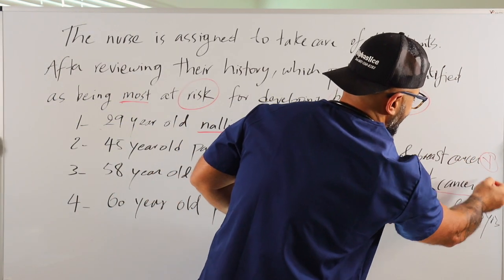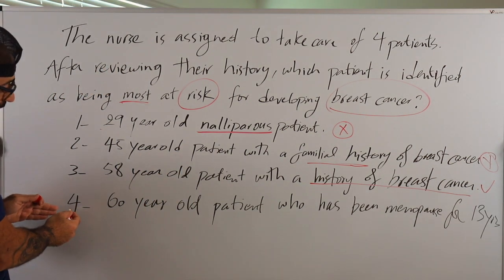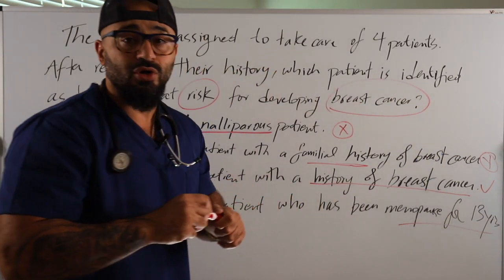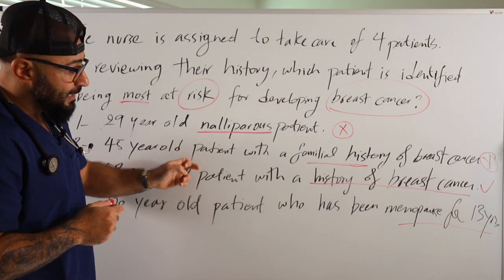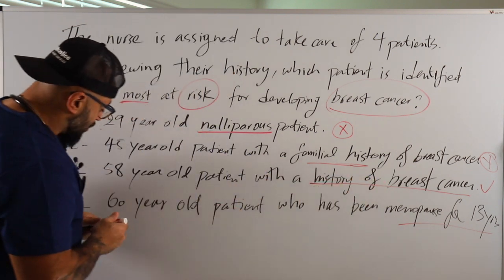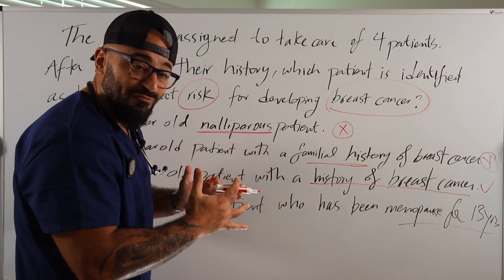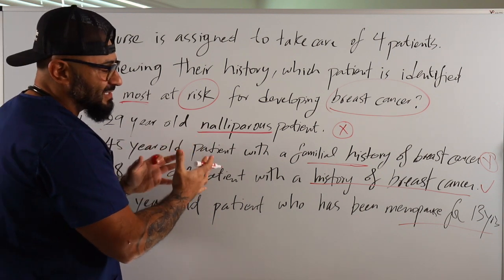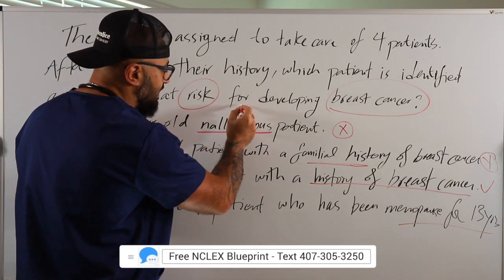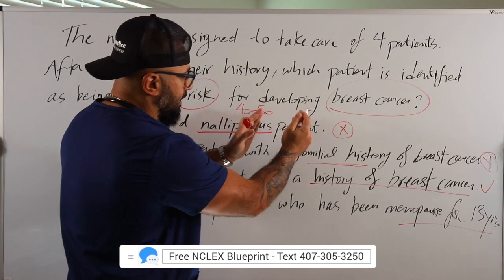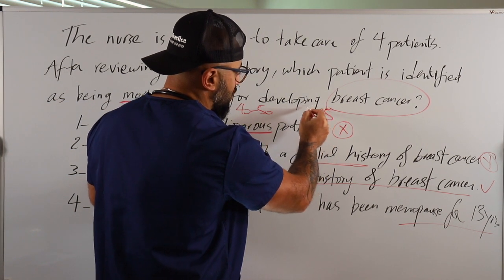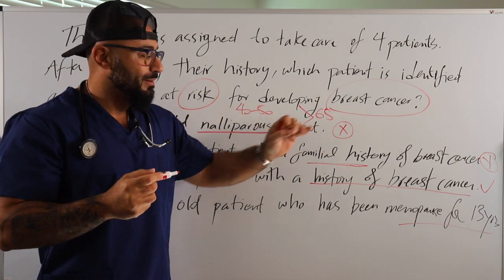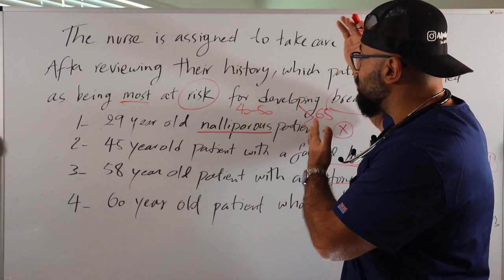Option number two is canceled because option number three is more powerful. Option number four: a 60-year-old patient who has been in menopause for 13 years. Being 60 and in menopause for 13 years is not a higher risk than a patient who had cancer before. The highest incidence of breast cancer is from age 40 to 50, then above 65. So that's how you break a question when it comes to breast cancer.